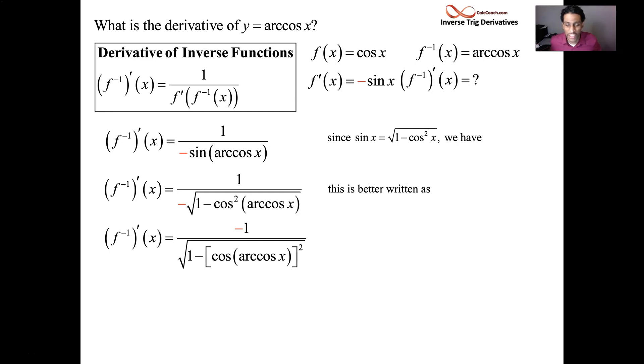And I just brought the minus 1 up to the numerator. Alright, great. Well, the cosine of arc cosine, they cancel each other out and you just get x. So this is why the derivative of arc cosine is going to be negative 1 over the square root of 1 minus x squared. No trig involved at all in the derivative.